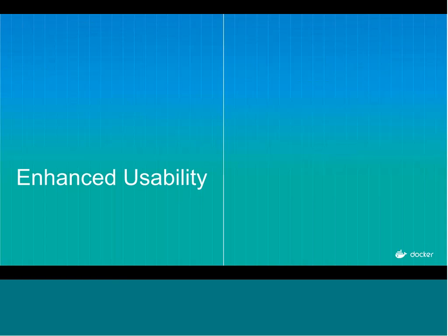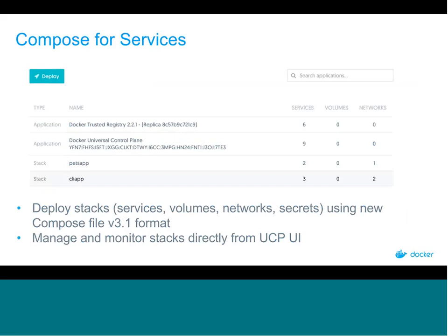Now let's look at enhanced usability features. First is Compose for Services. With Docker 1.13, we added the Compose File 3.0 format and now 3.1. This allows you to deploy stacks — Docker constructs consisting of services, volumes, networks, and secrets — using a Compose YAML 3.1 file with the Docker stack deploy command in the CLI or via the Deploy button in the stacks and applications page in the UCP UI. You can also manage and monitor stacks directly from the UCP UI, viewing how many services, volumes, and networks are in each stack.